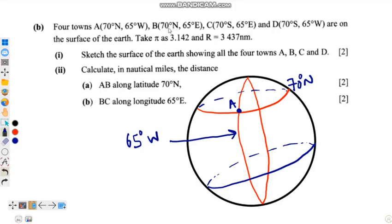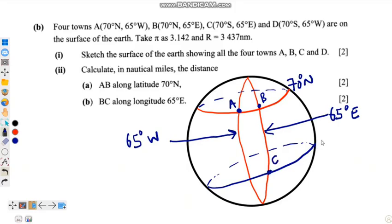Point B is on 70 degrees north and 65 degrees east. Points A and B share the same latitude, so point B is placed on the other side, with its longitude being 65 degrees east. Point C is on latitude 70 degrees south and longitude 65 degrees east, so point C is placed here with north and south labeled.